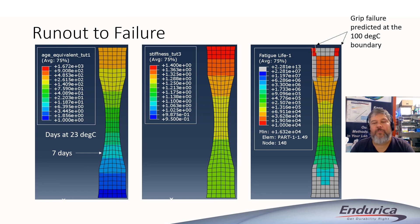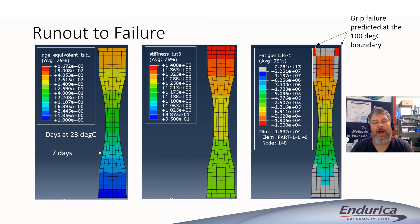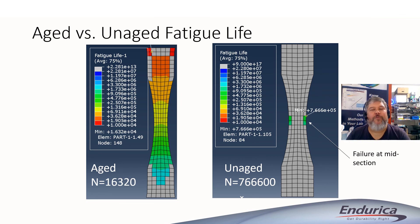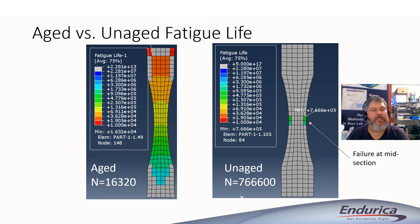The fatigue life is predicted to be about 16,320 cycles, which is about a week and a half of time. In this simulation, we're predicting that the specimen is going to break at the upper grip where the specimen has been held in the hot state. Just for comparison, if we turn off aging and do the fatigue test with material properties held constant throughout the life, then we predict failure at the gauge section as we might normally expect, and we end up with a fatigue life that's much longer — about 800,000 cycles.